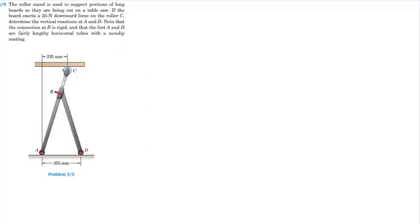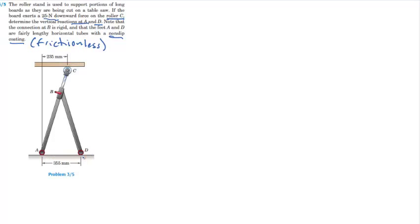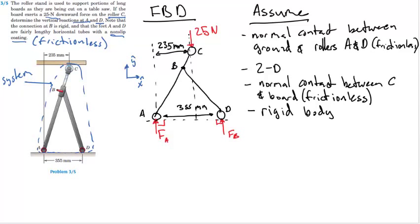Let's apply these steps to solve Problem 3.5. The board exerts a 25 N downward force on the roller at C, and we are asked to determine the reactions at A and D. Connection B is a rigid connection, and A and D have a non-slip coating, which can be read as frictionless. The first step is to choose the system of interest. Since we want to find the reactions at A, we choose the roller stand so that A is an external force. Removing the ground and the board makes the forces at those contacts external to the system. With system A, B, C, D chosen, we can draw the free body diagram.